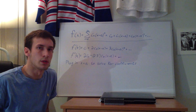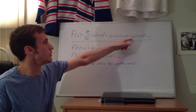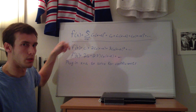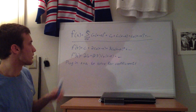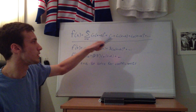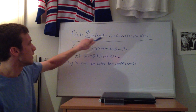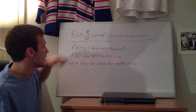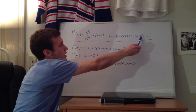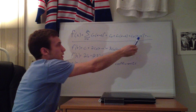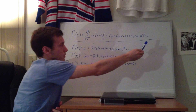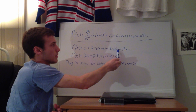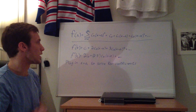Our goal is to find the coefficients c0, c1, c2. We can find them by taking derivatives of the function, doing term-by-term differentiation. The first derivative gives us c1 plus 2c2 times x minus a plus 3c3 times x minus a squared plus higher order terms. Taking the second derivative gives 2c2 plus 2 times 3c3 times x minus a plus higher order terms.